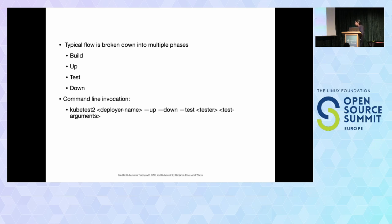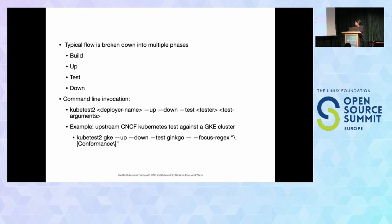This is the command line invocation for kubetest2: you use it as kubetest2 followed by deployer name, followed by flags for up, down, and test. The test flag is followed by the name of the tester and test arguments. For example, if you want to run upstream CNCF Kubernetes tests against a GKE cluster, GKE is the deployer name, the up and down flags deploy and decommission a GKE cluster, and then Ginkgo is used as the tester to run conformance tests — where the focus regex looks for any pattern matching 'conformance' in the test suite.